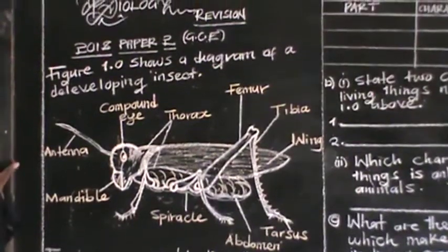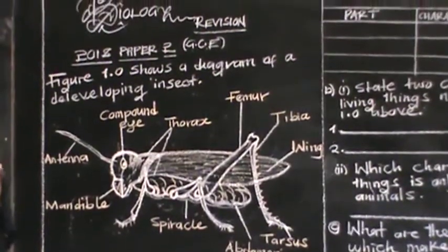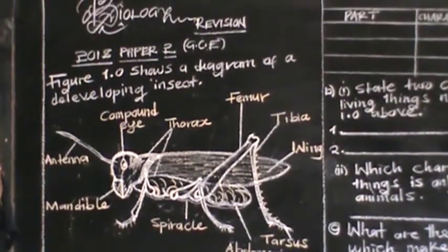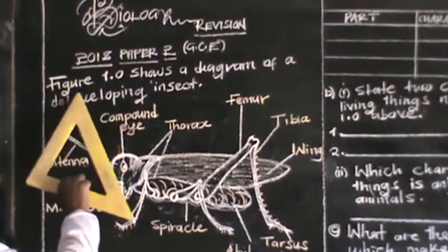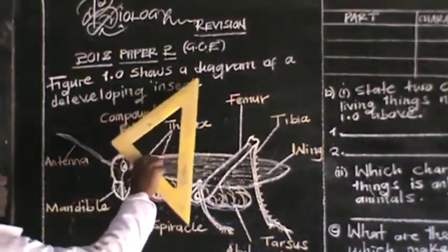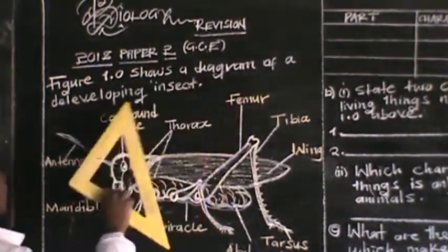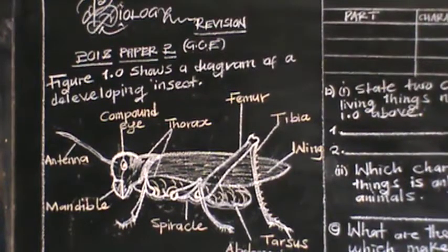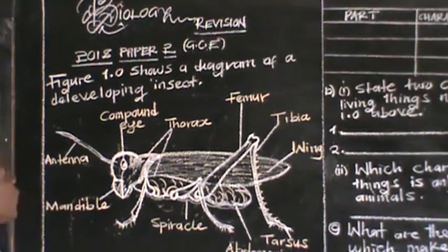Now let us look at the 2018 Paper 2 GCE. It says that figure 1.0 shows a diagram of a developing insect. So this figure is actually showing a diagram of a developing insect.